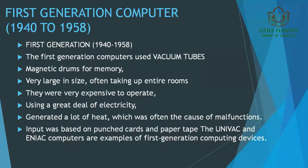The first generation started from 1940 and ended in 1958. These computers used vacuum tubes, and magnetic drums were used for memory. They were very large in size, often taking up an entire room, and were very expensive to operate. They used a lot of electricity and generated a lot of heat, which was often the cause of malfunctions. The input was based on punch cards and paper tape. The two most popular examples are UNIVAC and ENIAC.